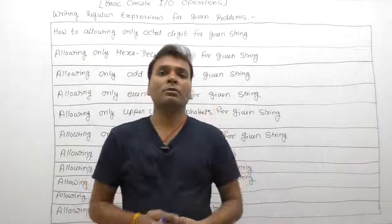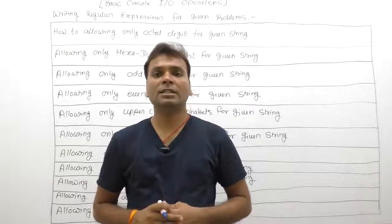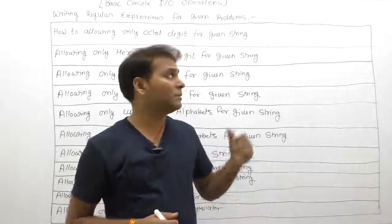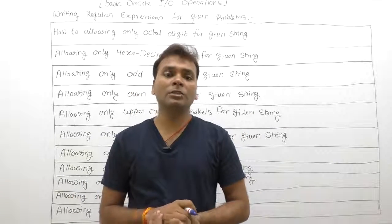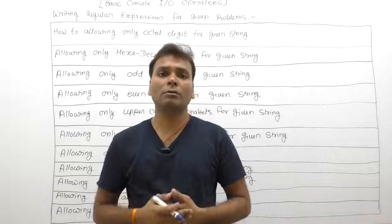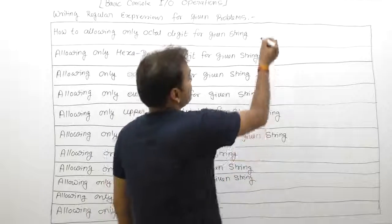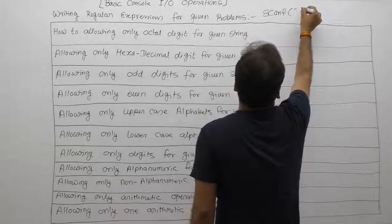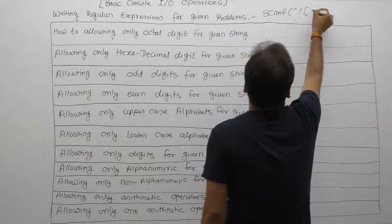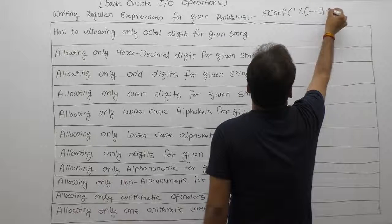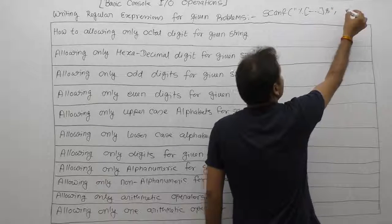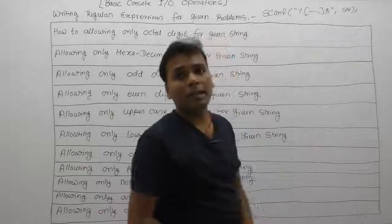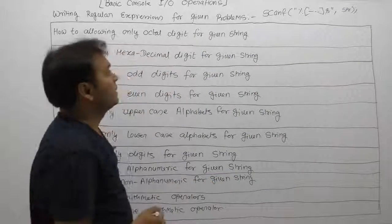As discussed in the previous video, regular expressions are applied only for strings, not for other types of inputs. Therefore, all inputs you provide will be stored in the form of a character array. Using scanf, the format is: percent, then some regular expression inside square brackets, then 's', then supply the address of a character array or simply the name of the character array.